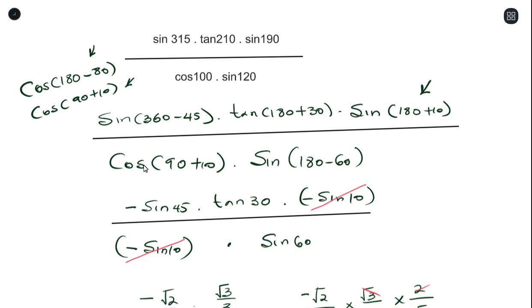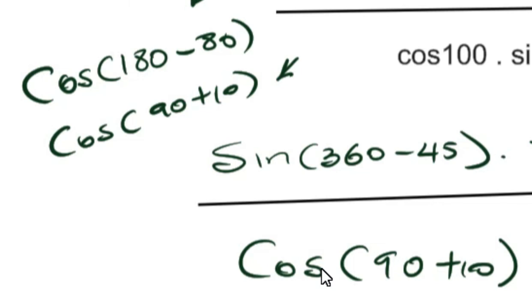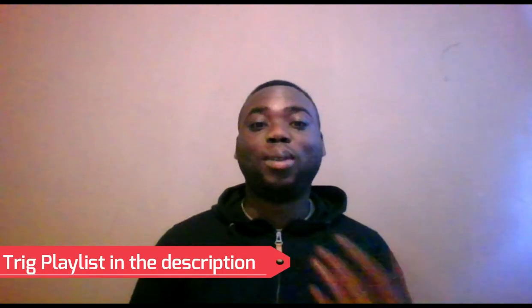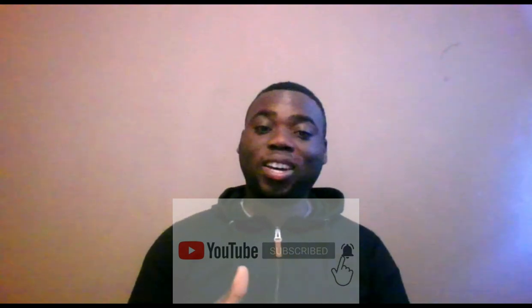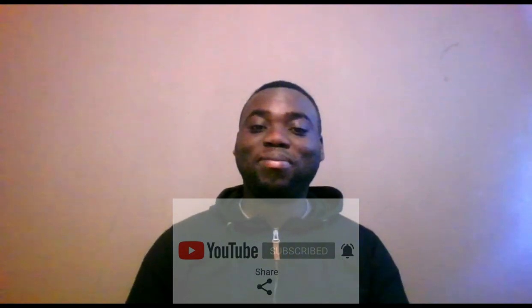The key takeaway is that whenever you have a question where using a co-function is possible, always look at both choices side by side and see which one pays off in the next step. I hope you now have a better understanding of how complementary ratios — or co-functions — work. In the next section we'll be talking about grade 11 identities. For other trig videos check the description, and please don't forget to like and subscribe.